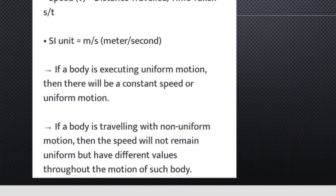Next, we define speed. Speed equals distance divided by time. For example, if the distance traveled is some kilometers and the time is 10 seconds, we can calculate the speed. Speed can also be rearranged: distance equals speed multiplied by time.